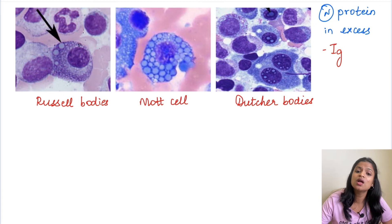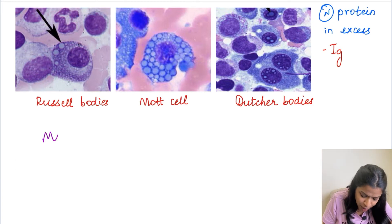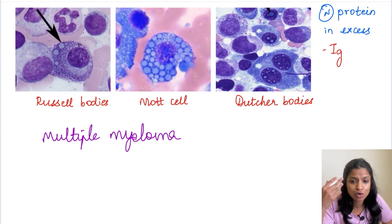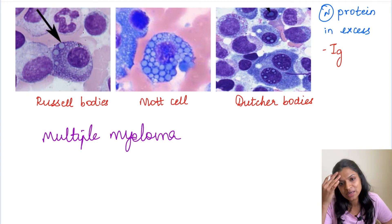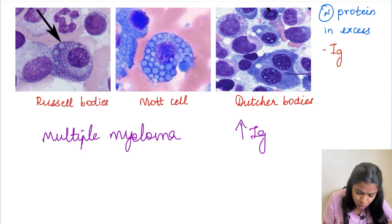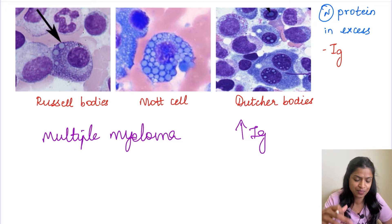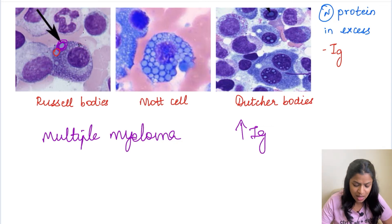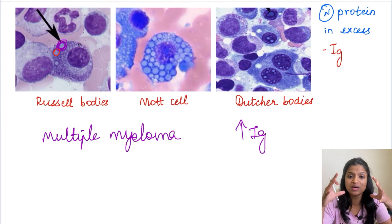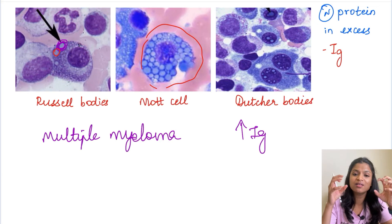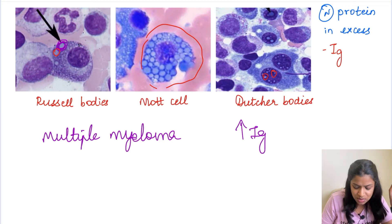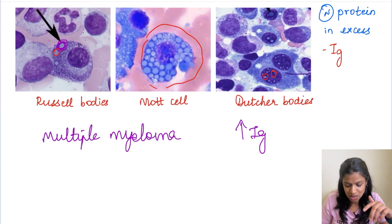Moving on to protein produced in excess — multiple myeloma, a plasma cell dyscrasia with increased non-functional immunoglobulin production. These immunoglobulins deposit in the cytoplasm or nucleus of plasma cells. When accumulated in the cytoplasm they are called Russell bodies. When so many Russell bodies accumulate that the cell looks like a grape with a back-to-back arrangement, that cell is called a Mott cell. When the same immunoglobulin is seen inside the nucleus, those inclusions are called Dutcher bodies — all very important MCQs.